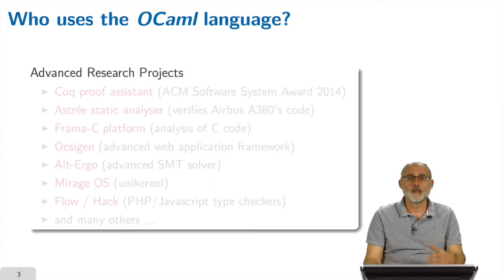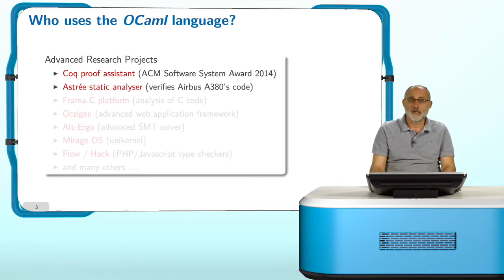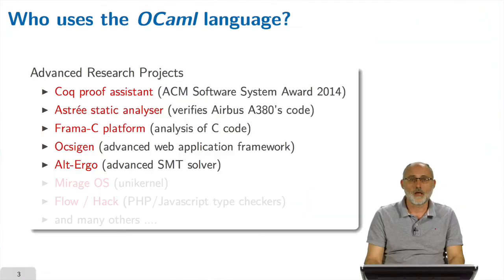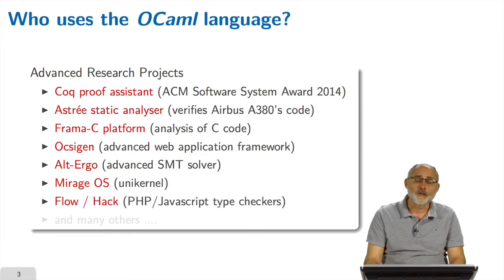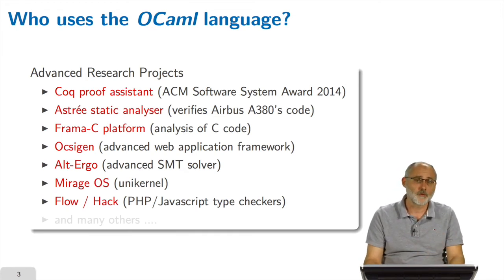But here we are more interested in learning why it is used in advanced research projects. The Coq proof assistant system, which was awarded the Software System Award by the Association of Computer Machinery just this year; the Astrée Static Analyzer, which is used daily to verify the command and control code of the Airbus A380; the Frama-C Platform, which performs advanced analysis of C code; Ocsigen, which is a revolutionary way of writing web applications; Alt-Ergo, a satisfiability modulo theories solver; Mirage OS, which is an incredible achievement, developing a kernel as a library that you can bind directly inside your application to run on bare metal. Or Flow and Hack, which are PHP or JavaScript type checkers — the type checker is written in OCaml, fundamentally. This is a project coming from Facebook and many others.